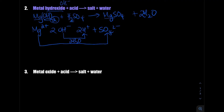Let's check the balance. There is one magnesium on each side. Looking at oxygen from OH: two oxygens on the left and two oxygens in the water on the right — we exclude the oxygens in SO₄ since they appear on both sides. Hydrogens: two from the OH and two from H₂SO₄ make four, and four hydrogens in the two water molecules on the right. One SO₄ on each side. The equation is balanced.